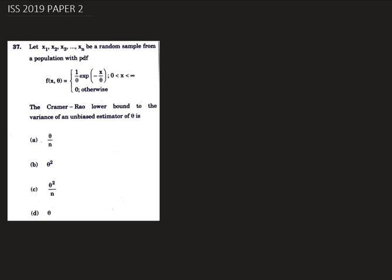Hello, today we are going to solve question number 37 from ISS 2019 Paper 2. Here we are asked that x1, x2, x3, dot dot xn be a random sample from a population with pdf f(x, theta) which equals 1 by theta e to the power minus x by theta, where x is 0 to infinity and 0 otherwise.